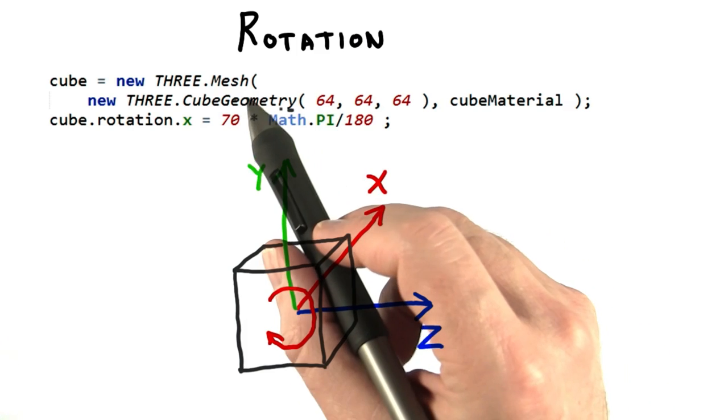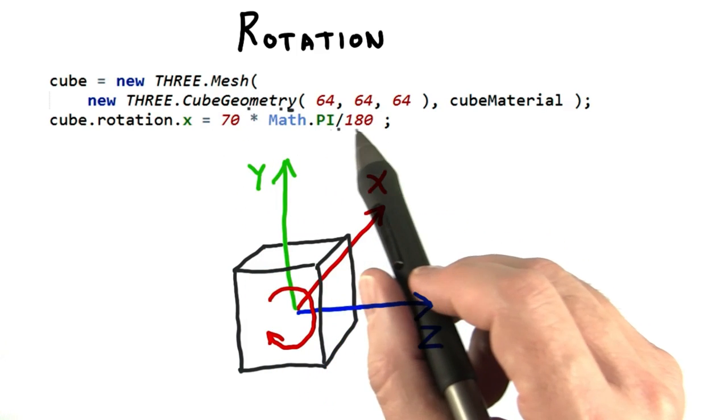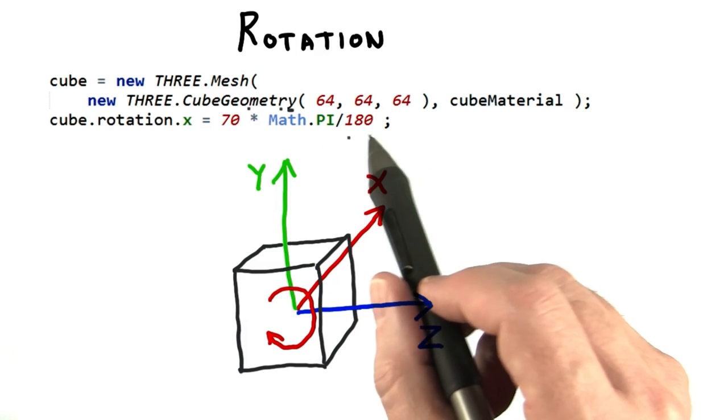As a human, I like degrees. So here I'm specifying 70 degrees, then converting this number to radians by multiplying by pi over 180.